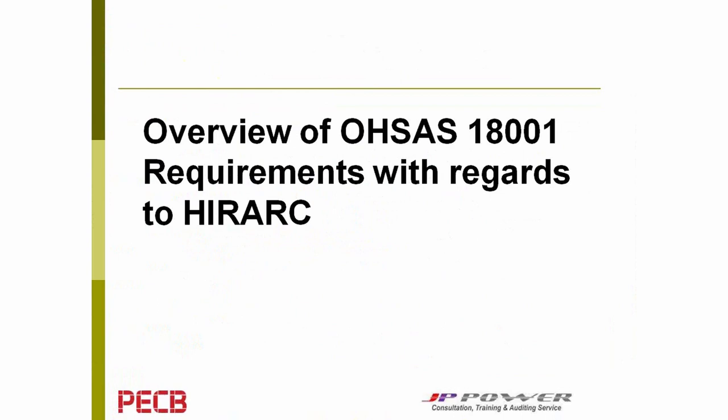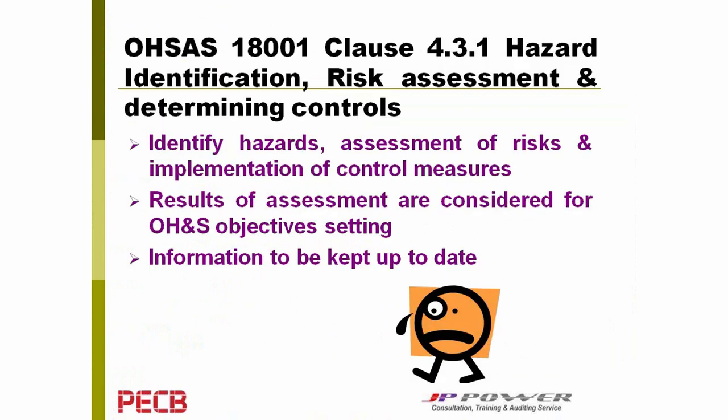Let's go through the OHSAS 18001 requirements and their relationship with HIRAC. Under Clause 4.3.1, there is a specific requirement stating hazard identification, risk assessment, and determining controls. This clause requires an organization to identify occupational hazards at the workplace, assess the risks of those hazards, and determine proper control measures. It also requires the HIRAC to be regularly kept up to date, and the results from the HIRAC will be used in setting up OHSAS objectives and programs.